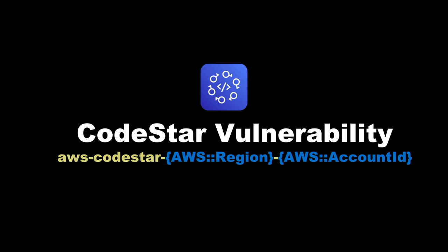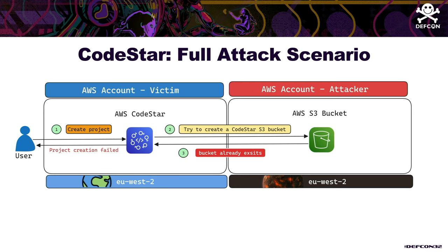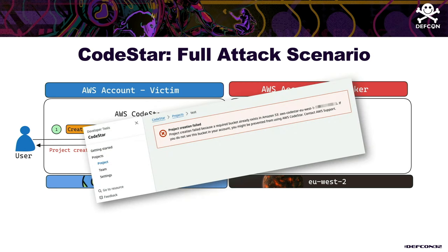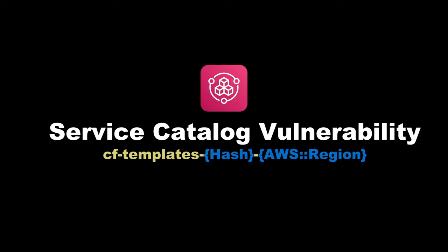For AWS CodeStar — a unified interface for managing software development activities — the service was deprecated just about two weeks ago. The attacker claims the bucket before the user; when the user tries to create a CodeStar project in a region, CodeStar fails to create the bucket and returns an error — a denial-of-service preventing the user from using CodeStar in that region. There is also one more vulnerability in AWS Service Catalog, which we won't elaborate on now but will cover in a blog post published shortly.